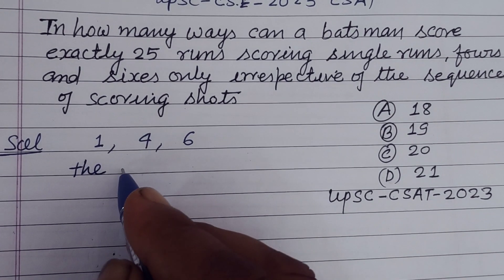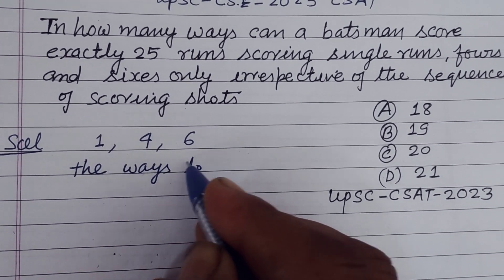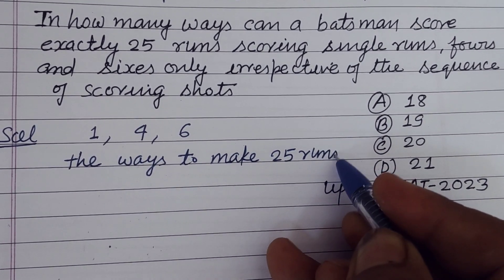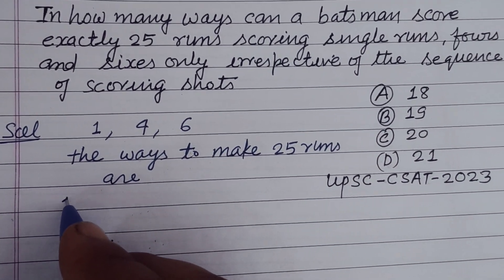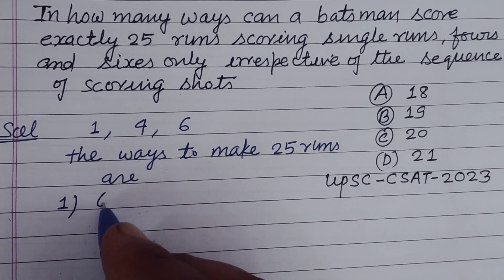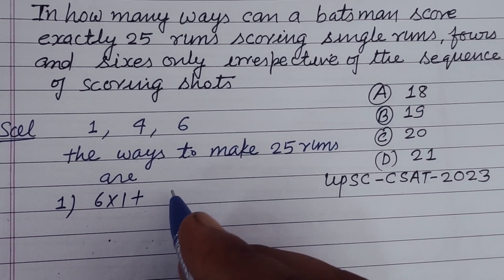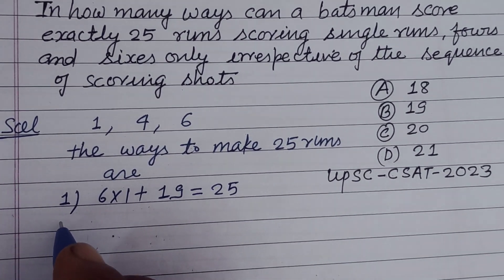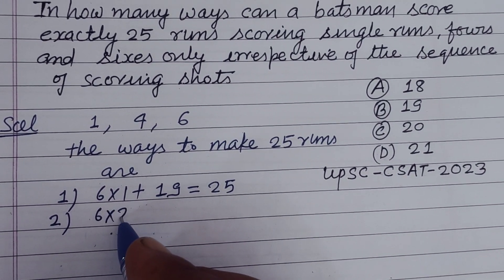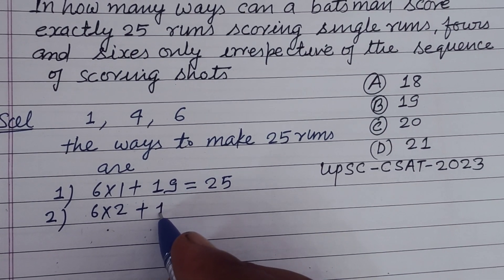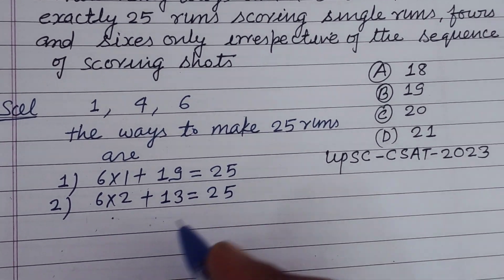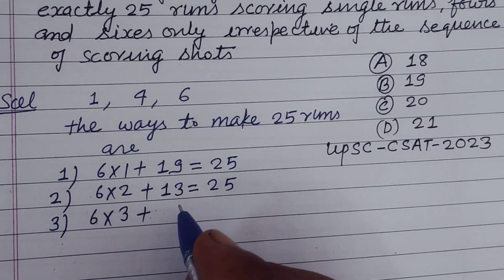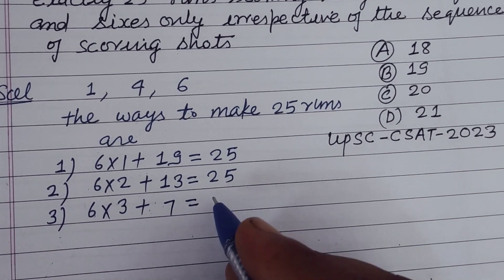Number 1, starting from 6, 6 plus 1 and taking singles. 6 ones are 6 plus 19, this is 25. This is first condition. Second condition is when he takes 2 sixes and 13 single runs, so this is 25. Third condition, when he takes 3 sixes and 7 singles, so this is 25.